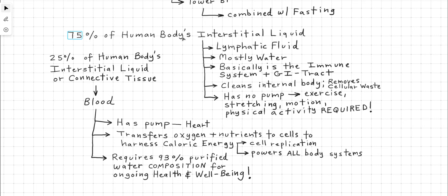Next is the human body's interstitial fluid. 75% of it is the lymphatic fluid. It's mostly made up of water. The lymphatic system is basically the entire immune system of the body, along with the GI tract, the large intestine especially. The lymphatic system cleans the internal body, removes cellular waste, decreasing toxicity, but it needs the water to do so. The lymphatic system has no pump. So in order to move the lymphatic fluid around, you need exercise, stretching, general motion, and general physical activity, like just cleaning up your house, taking a walk. That's sufficient to move the lymphatic fluid around your body.